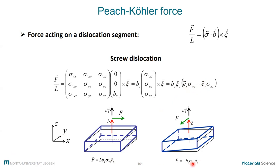The components of the stress tensor which really create a Peach-Koehler force for a screw dislocation are the yz component and the xz component, pointing in different directions along x and y respectively. In this coordinate system, a yz stress drives the dislocation along the x direction, while xz stress drives it along the y direction. This is valid only for a screw dislocation. The original box is shown in black, and if we distort it to create yz stress, the Peach-Koehler force drives the dislocation in this direction. Applying xz stress instead drives the dislocation along minus y — pushed outwards of the plane.